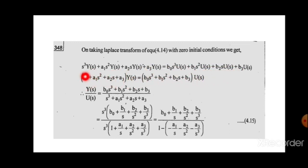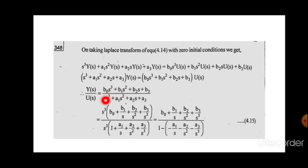We can take Y(s) outside on the left and U(s) outside on the right. Writing Y(s)/U(s), we take s³ outside from both numerator and denominator — s³ cancels — giving the transfer function as Y(s)/U(s) equal to (b₀ + b₁/s + b₂/s² + b₃/s³) divided by (1 + a₁/s + a₂/s² + a₃/s³).